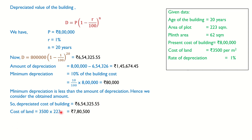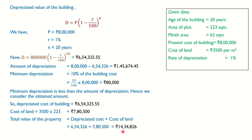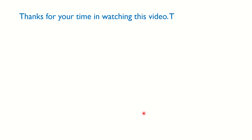The cost of land is 3500 × 223 square meters = 7 lakh 80,500 rupees. The total value of the property is the depreciated building cost plus the cost of land, giving a total of 14 lakhs 34,826 rupees. So the original building cost of 8 lakhs was reduced to 6 lakh 54,000 after 20 years, and the total property value including land comes to 14 lakhs 34,826 rupees.